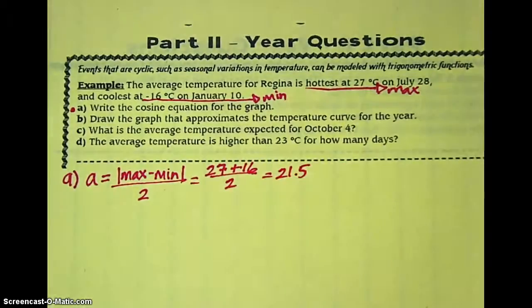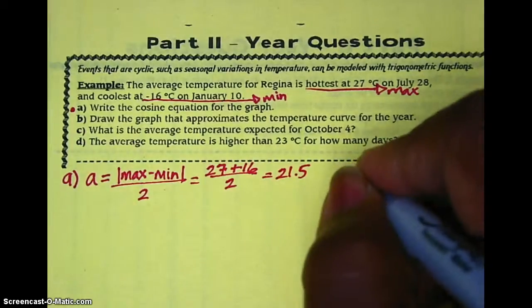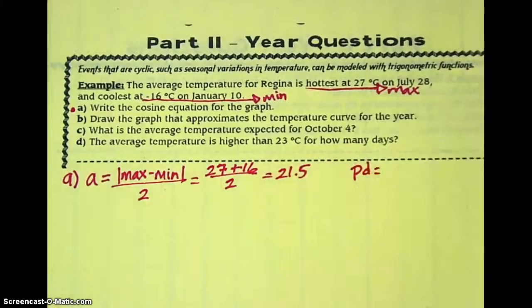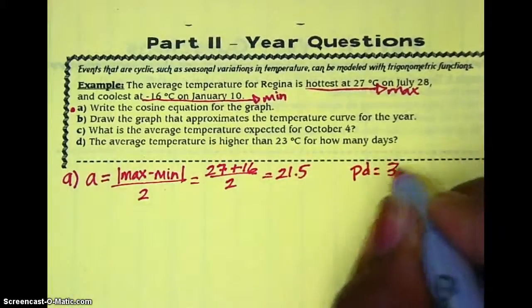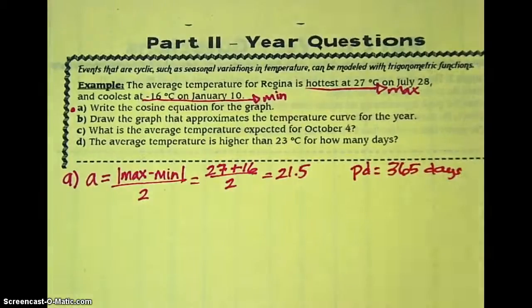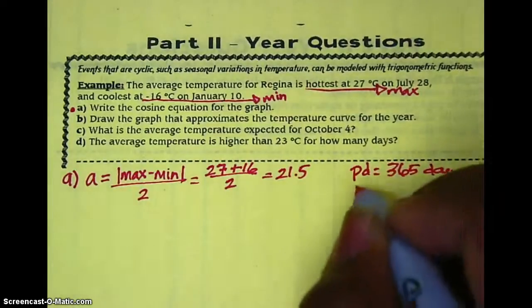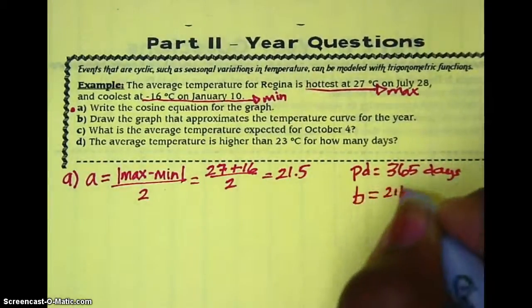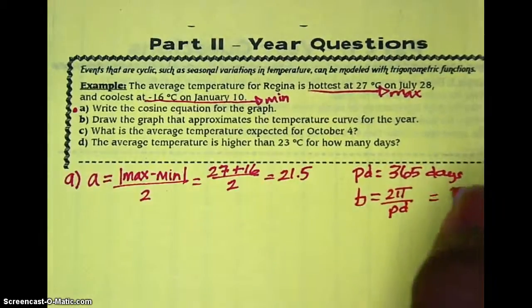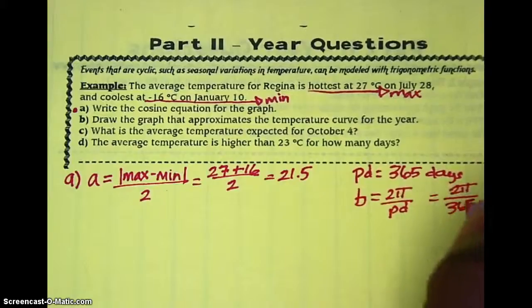Next, we'll look at the value for B. In trying to find B, we need to understand that any time we're working with the year problems, the period is always 365 days. And we know that B is 2π over the period for cosine graphs. So in our case, B becomes 2π over 365.